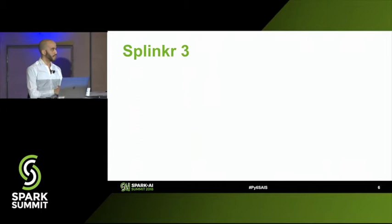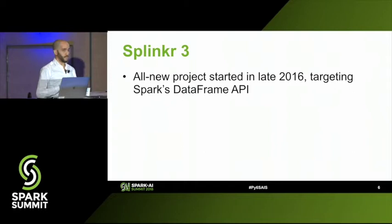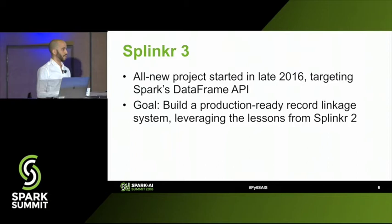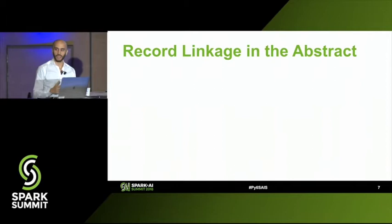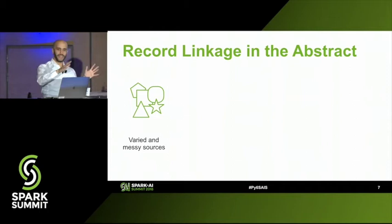Building Splinker 2 did prove as a successful experiment that yes, we could do a kind of global record linkage at scale — we just needed to take the lessons from that and build something more production-ready. That's where Splinker 3 comes in: an all-new system built at MassMutual, targeting Spark's DataFrame API from the start, with the goal of building a production-ready record linkage system leveraging all the lessons learned from Splinker 2.